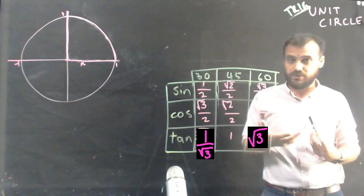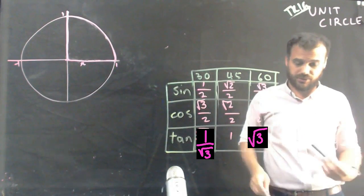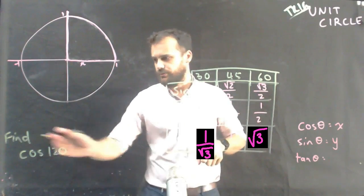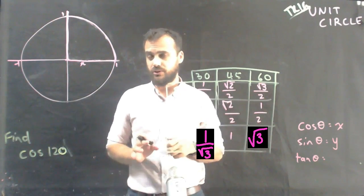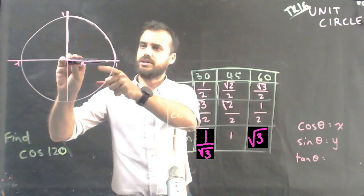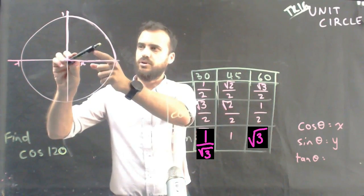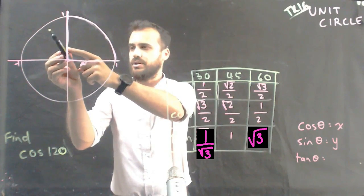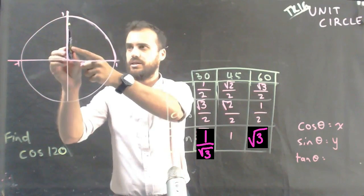So I'm going to show you quickly how to move through the unit circle and how that works. Here's the question: find cosine 120. In order to find cosine 120, I'm going to start from here and move 120 degrees this way, so 90 plus 30.